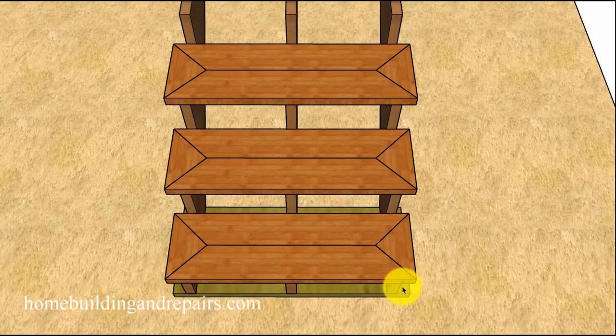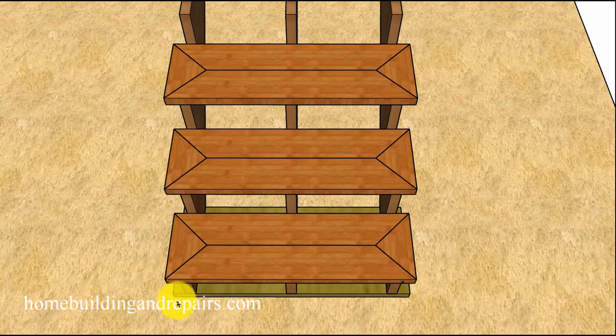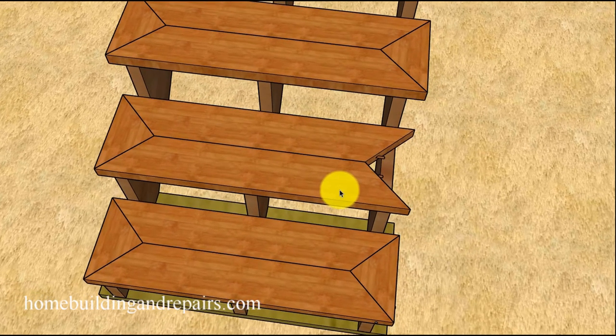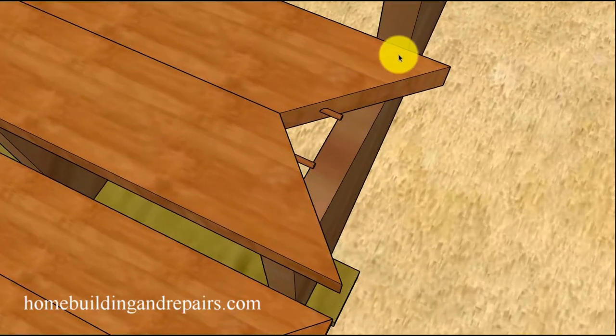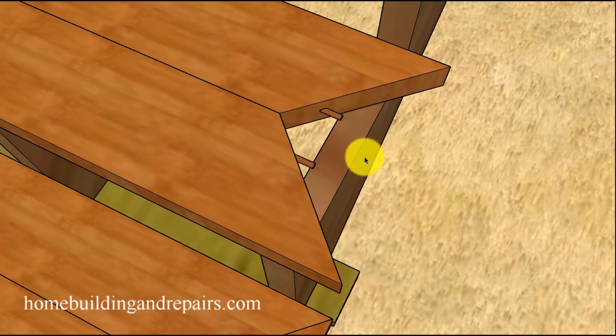The last idea I came up with would be to move the stringers in a little bit. In this example I moved it in two inches and you can see that it provides you with a little more of the stair tread to bear on the stringer. And you could always move it over a little farther. If I move this in another inch then it would provide the stair treads with almost full bearing.